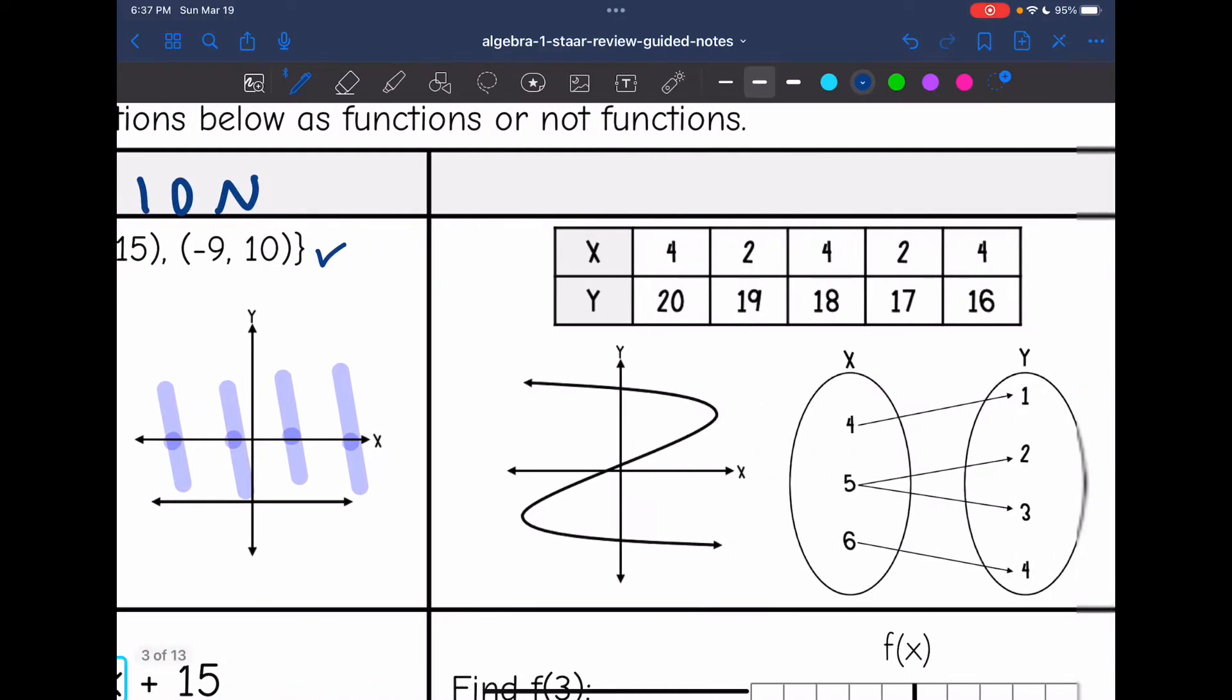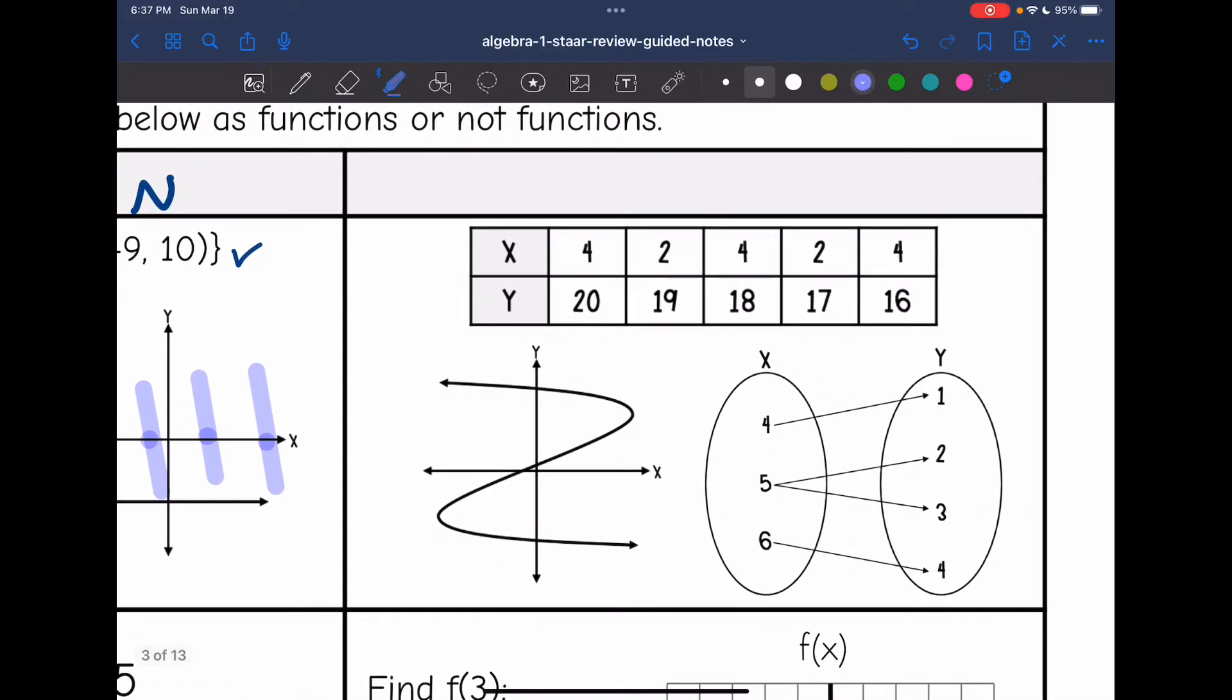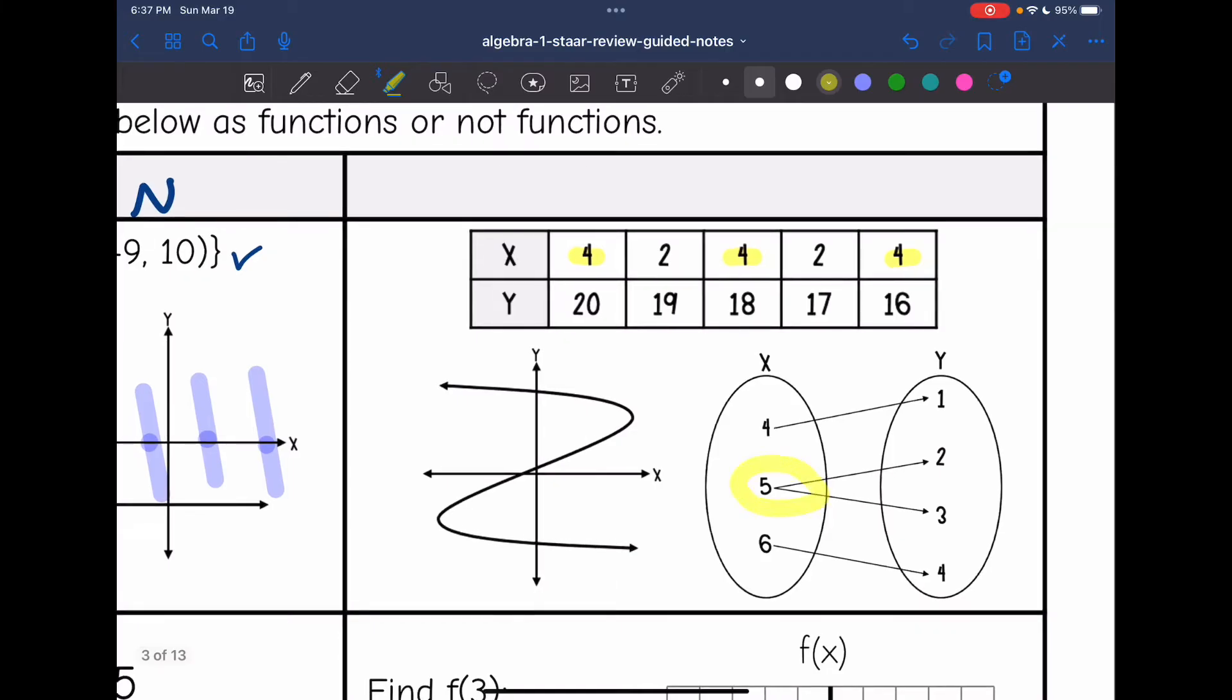Let's look at these representations. I see repeating x values. And on this mapping right here, 5 has more than one output. And then this one definitely does not pass the vertical line test. So that means that all of these representations show not a function.